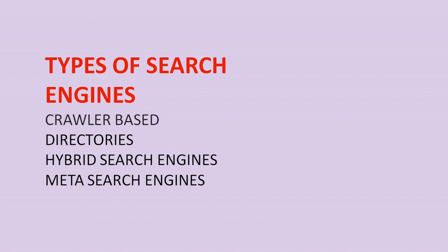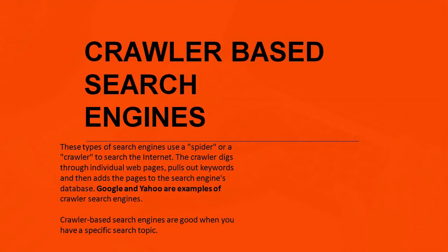Crawler-based search engines use a spider or crawler to search the internet. The crawler digs through individual web pages, pulls out keywords, and then adds the pages to the search engine's database. Google and Yahoo are examples of crawler-based search engines, and they are good when you have a specific search topic.